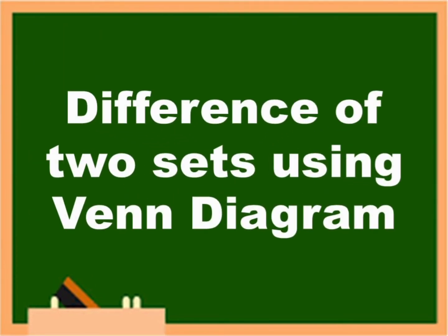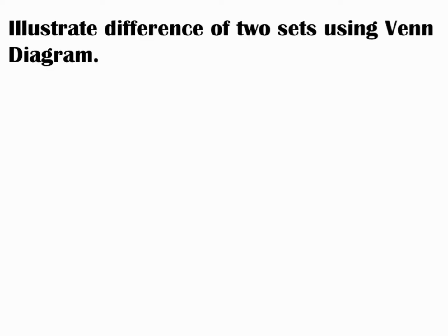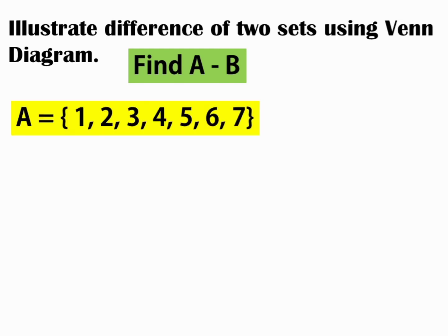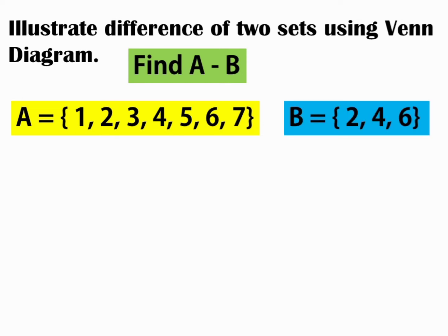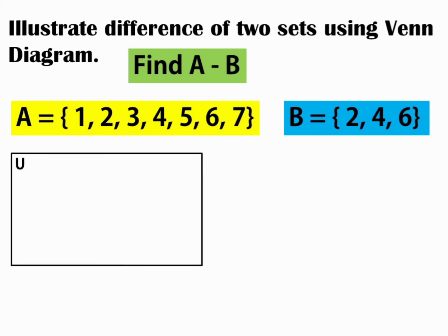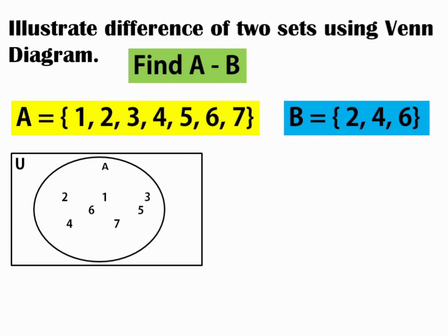Now, let's illustrate the difference of two sets using a Venn diagram. Find the difference between A and B if A is equal to {1, 2, 3, 4, 5, 6, 7} and B is equal to {2, 4, 6}. Again, we use the rectangle to represent the universal set and circles to represent the subsets. Observe that set B has elements 2, 4, 6 which are also elements in A. Therefore, B is a subset of A.